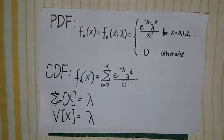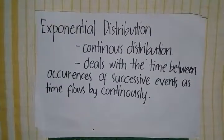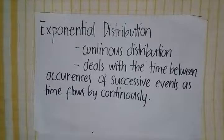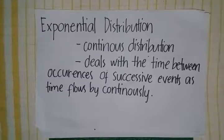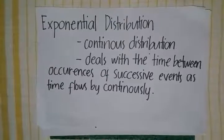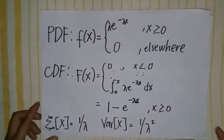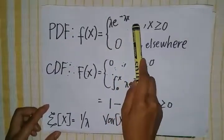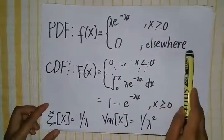On the other hand, the exponential distribution is a continuous distribution, meaning the random variable can take on any value. Exponential distribution deals with the time between occurrences of successive events as time flows by continuously. The PDF is f(x) = λe^(−λx) for x ≥ 0, and 0 elsewhere.